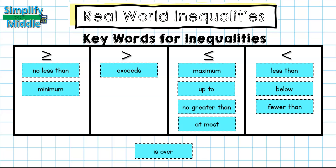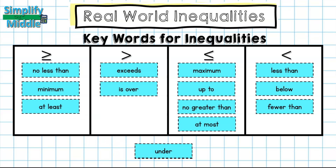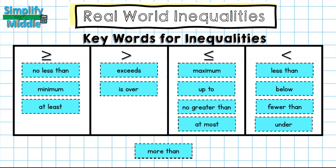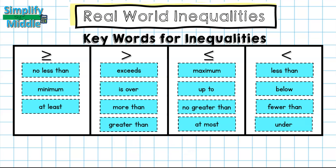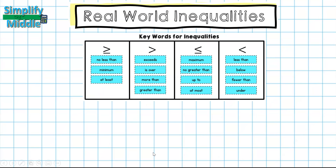'At most' goes under less than or equal to. 'Over' is greater than. 'At least' is greater than or equal to — you could be that value or higher. 'Under' is less than. 'More than' is greater than. And of course 'greater than' goes under greater than. Now that we've identified our key words, let's use them to translate some phrases.